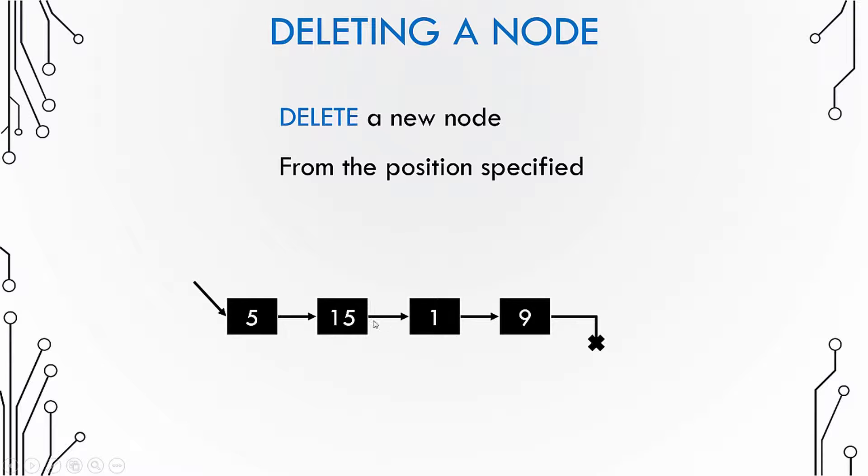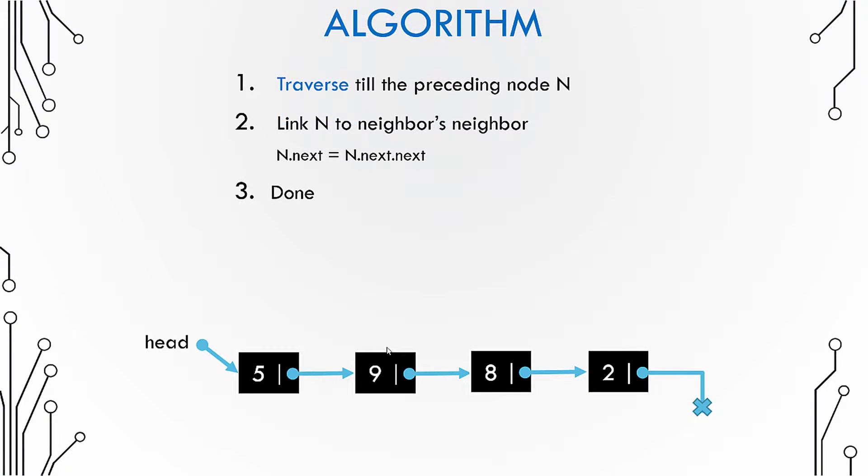For example, if you want to delete the node at position number 3, in this case the node with value 1, you need a way to make the node with value 15 link with the node with value 9, thereby skipping the node with value 1, right? Let us see how we do this in detail.